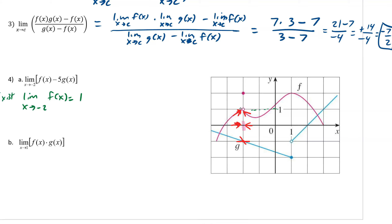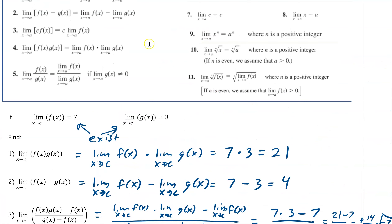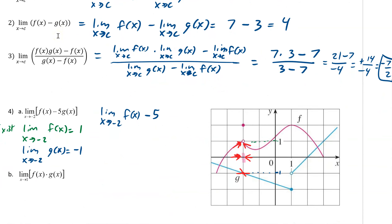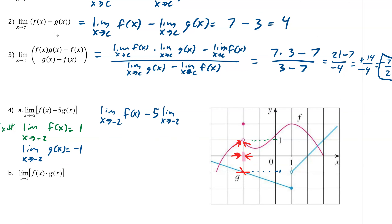What we're doing here is showing this exists. We cannot split these up into a subtraction and use the constant until we show that they exist. Now, the limit as x approaches negative 2 of g(x) — that value is defined at negative 2, so we already know it's negative 1. We get 1 for f and negative 1 for g; they both exist. So we can split them using our limit laws: f(x) minus, and the 5 is a constant, so we pull it out front. It becomes 1 minus 5 times negative 1, which is 1 plus 5, giving us 6. So the limit as x approaches negative 2 of f(x) minus 5g(x) is 6.